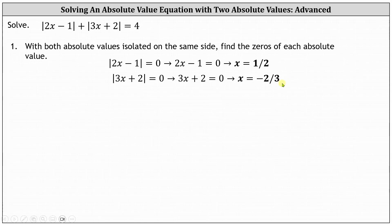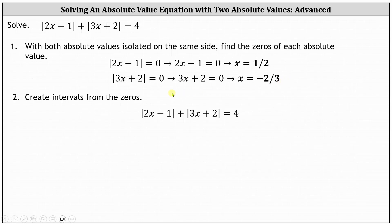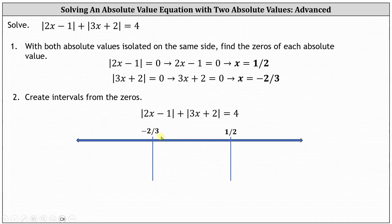Step two: we now divide the number line using these zeros. Considering the entire number line and excluding negative ⅔ and 1½, we have three subintervals. On the left, we have the open interval from negative infinity to negative ⅔. In the middle, we have the open interval from negative ⅔ to 1½. On the right, we have the open interval from 1½ to infinity.